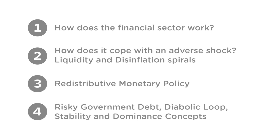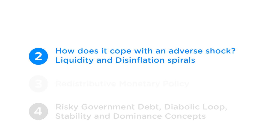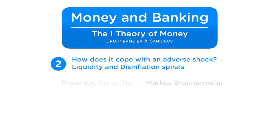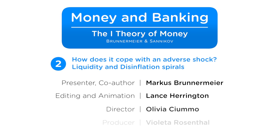To sum up, Part 1 of this video series illustrated how banks create money in normal times. In Part 2, we study how the financial economy copes with an adverse shock, focusing on two spirals: the liquidity spiral and the disinflation spiral. We will also introduce the paradox of prudence. Click on Part 2 for the next video.